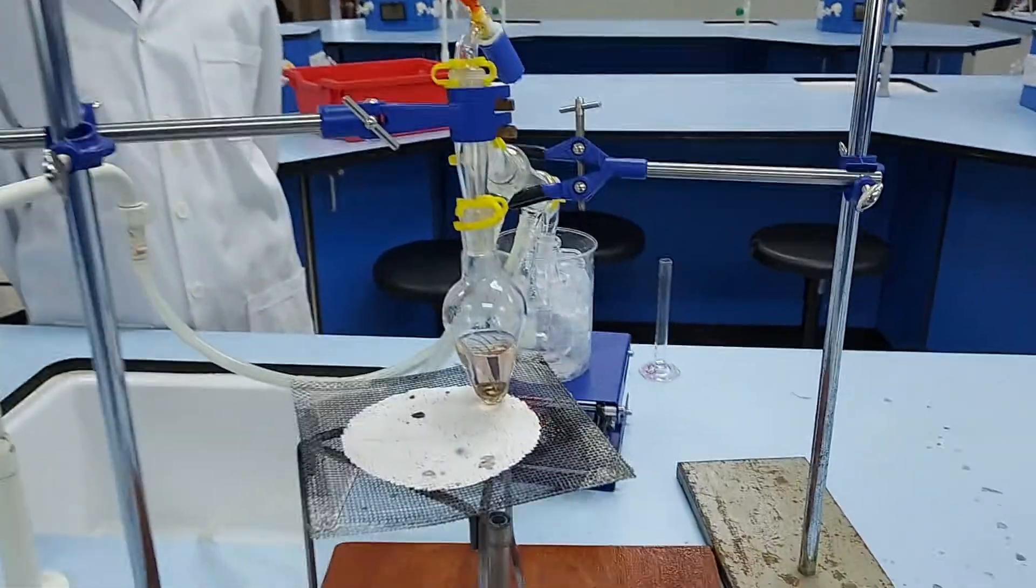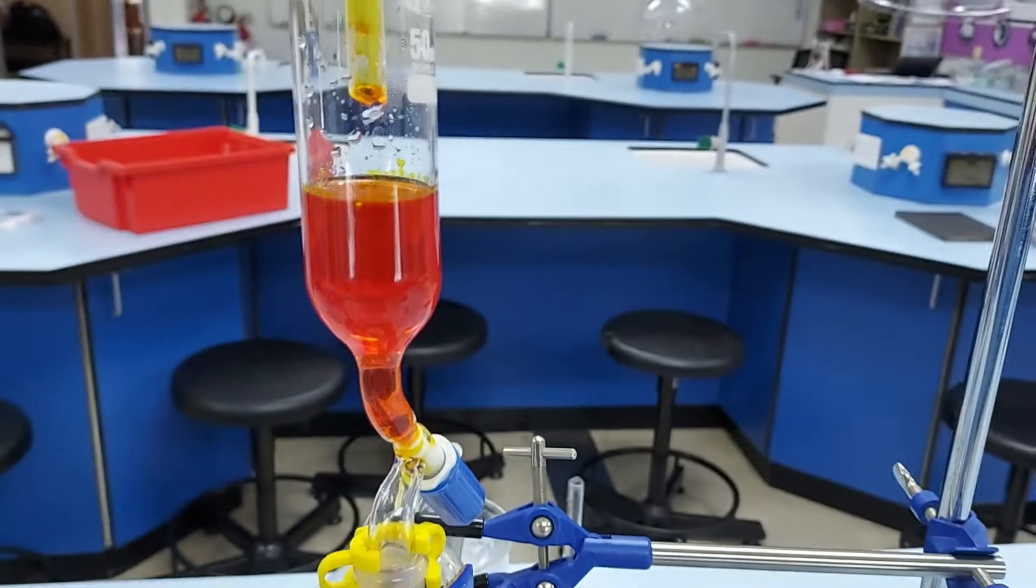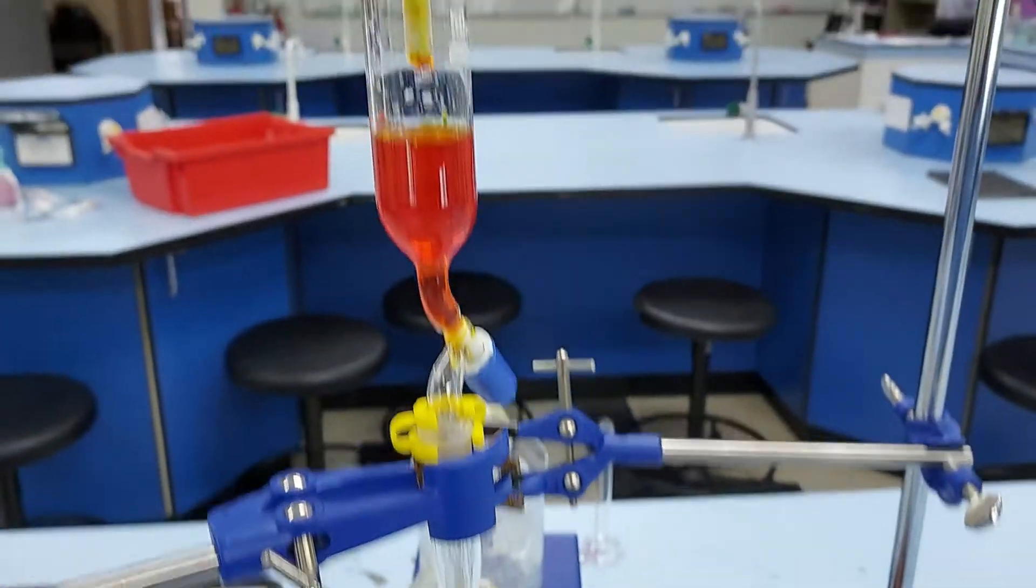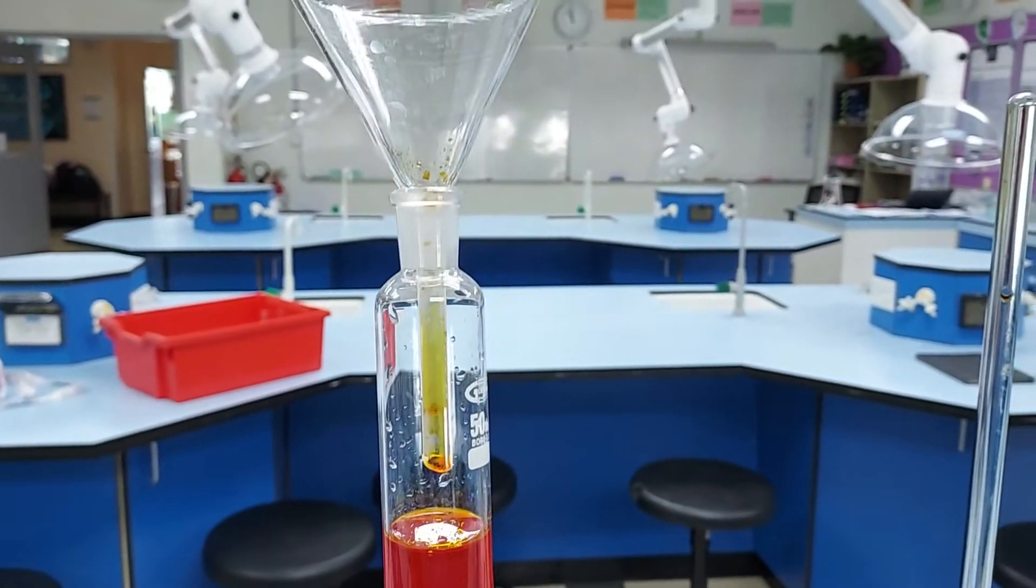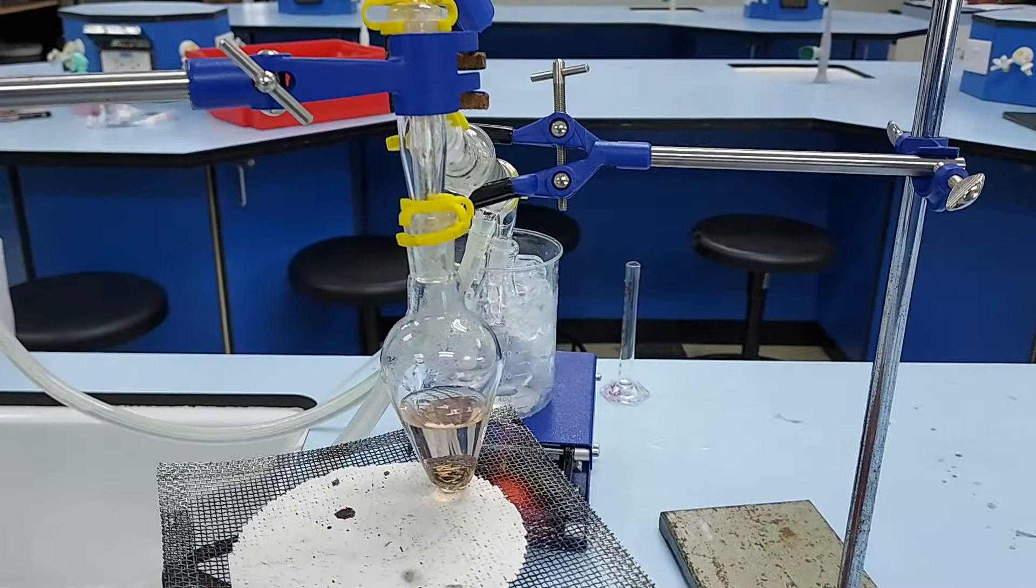In this experiment we're going to oxidise ethanol to ethanol using sodium dichromate. You can see here we've got a funnel going down into a pear-shaped flask.